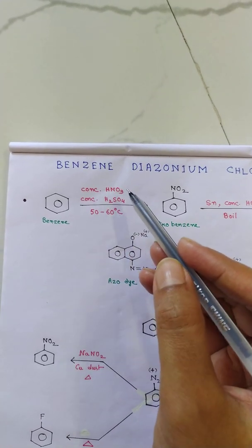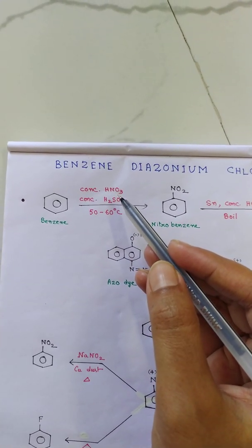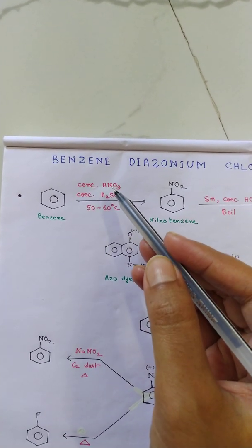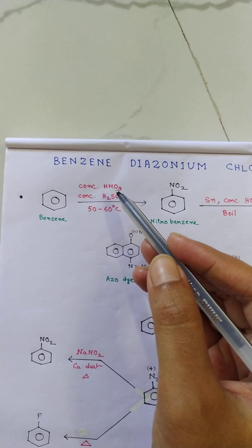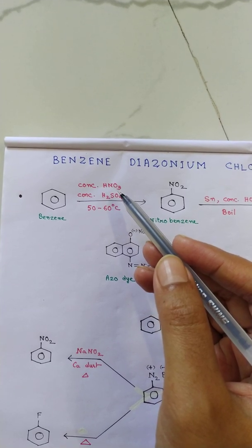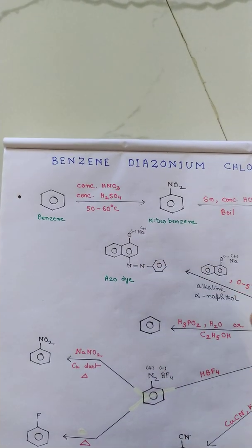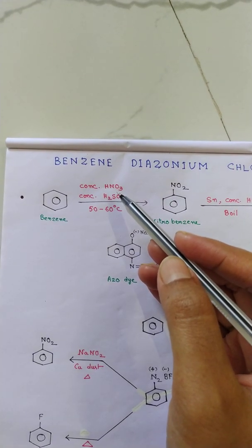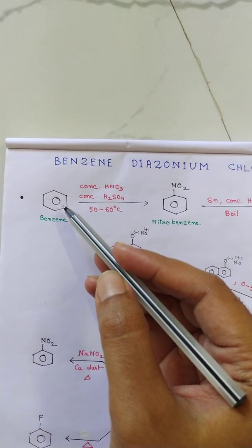The OH group of the HNO3 comes out after protonation and we have NO2 plus, which gives the electrophilic aromatic substitution on benzene and we have the product nitrobenzene.